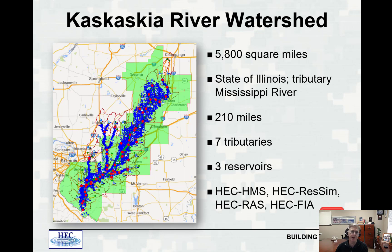The Kaskasky River watershed study aimed to convert SWIMS models into WAT models and run them for a planning-type study. The Kaskasky watershed is about 5,800 square miles, with 210 miles of hydraulic modeling, seven tributaries, and three reservoirs. HMS, ResSim, RAS, and FIA were all utilized in this SWIMS-to-WAT conversion study.